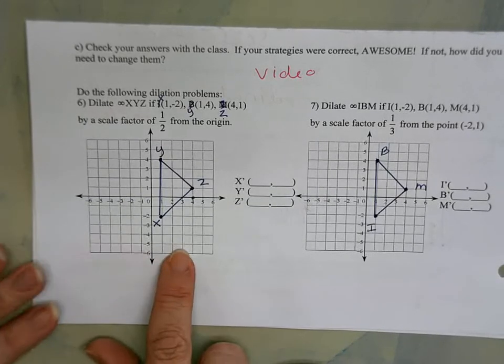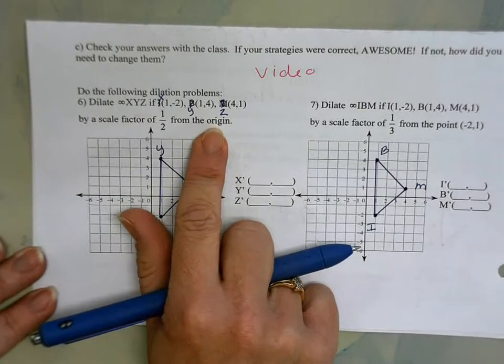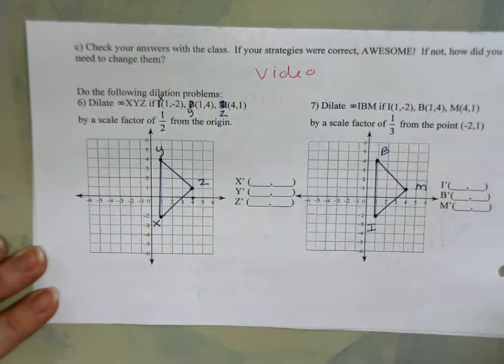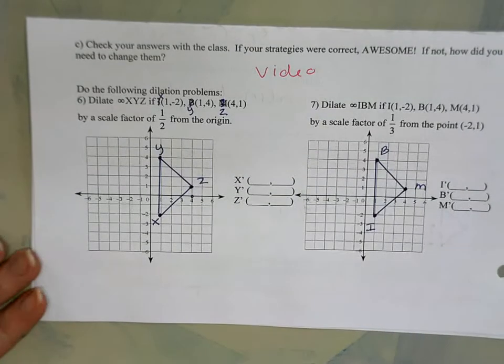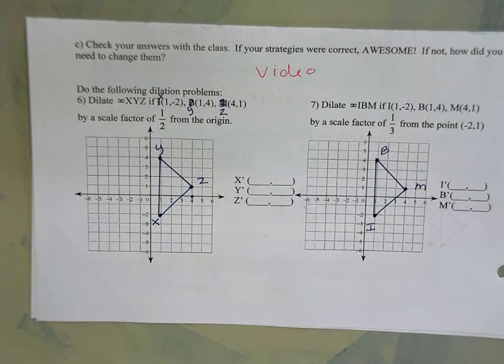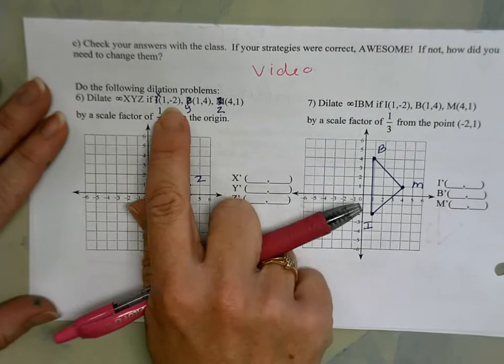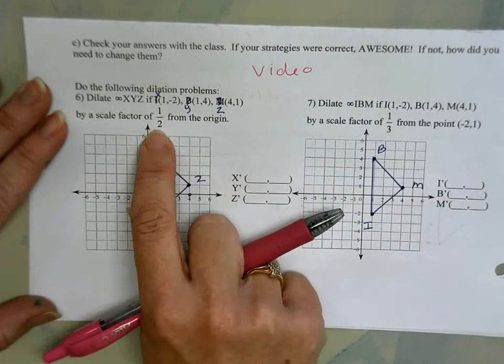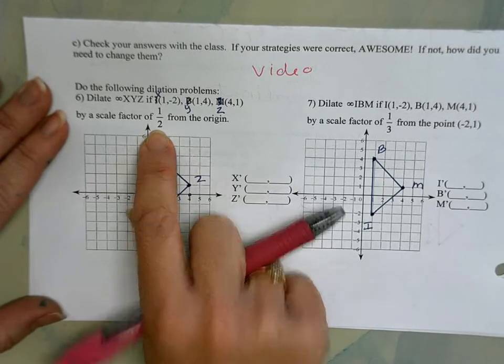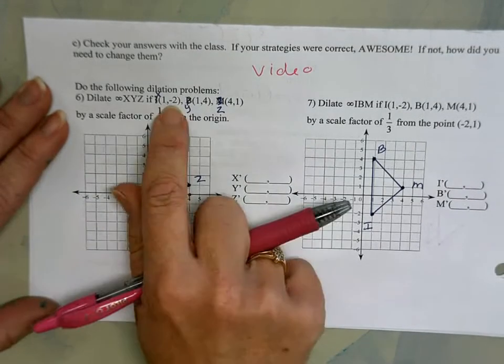One where it's a dilation from the origin and one that we looked at today where it's a dilation at a different point. We'll look at how that's related to each other and how it's a little bit different. So the dilations this week—you were doing a great job—you realize that you could just take each coordinate and multiply it by the scale factor.